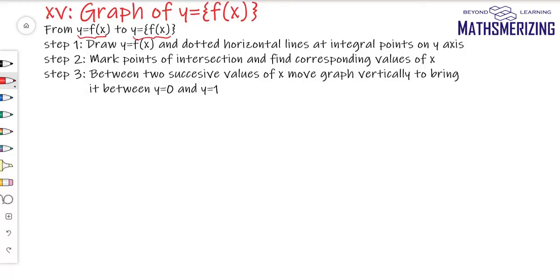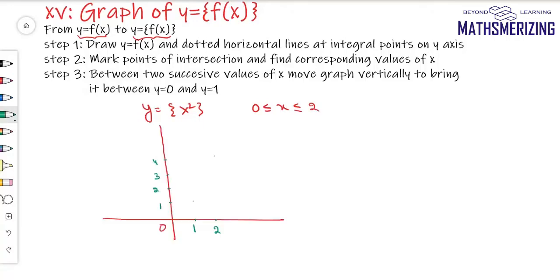For example, I have to draw the graph of y = {x²} when x lies between 0 and 2. I'll draw the graph of y = x² and then draw dotted horizontal lines at integral values of y.